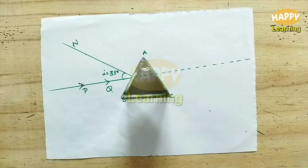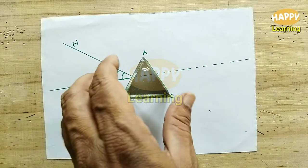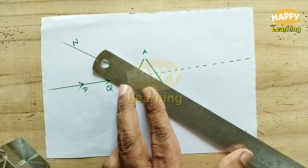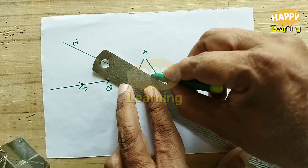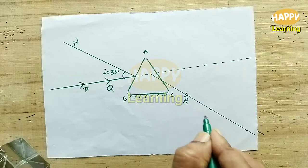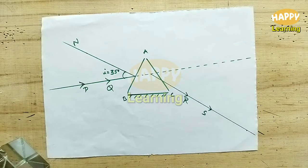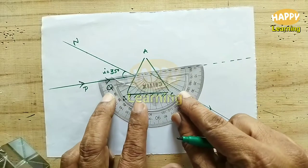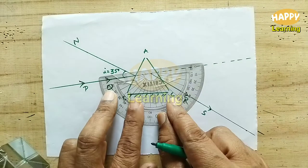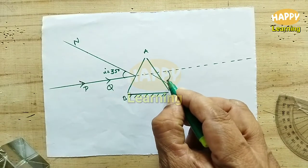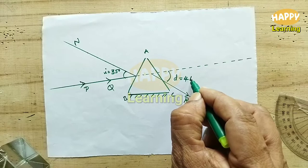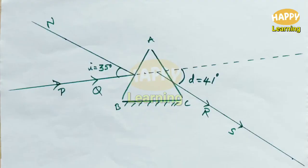Project the laser beam along the incident ray. You will get the emergent ray on the other side of the prism. Put two dots to draw the emergent ray and join these two points — you will get the emergent ray. Mark it as RS. The angle of deviation, that is the angle between the incident ray and the emergent ray, is 41 degrees. So D equals 41 degrees.